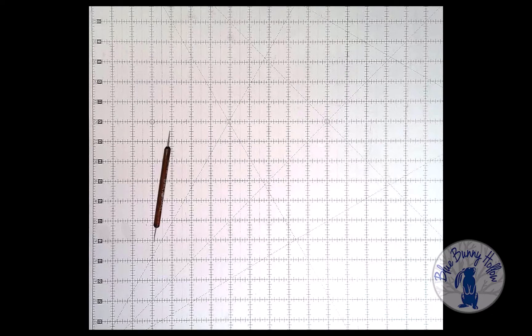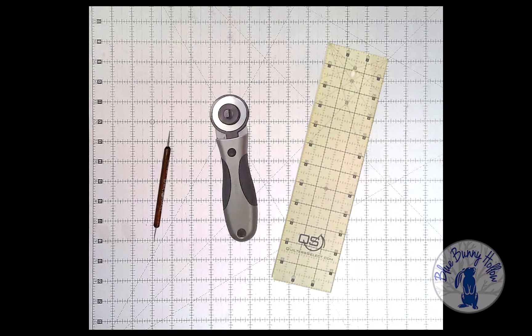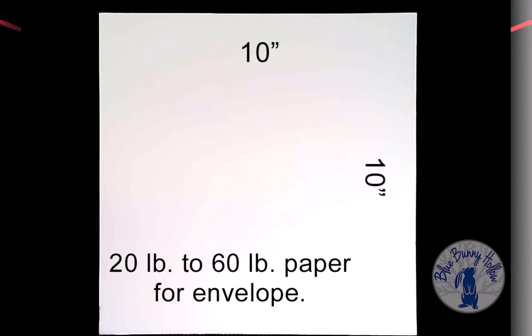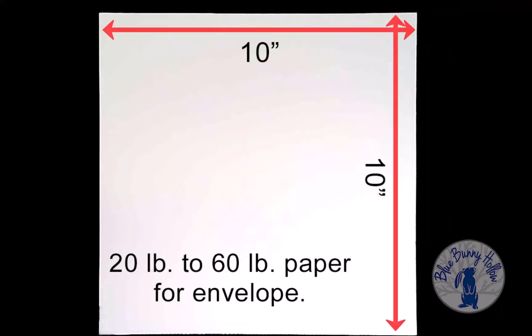We will start with using what you probably have on hand: burnisher, rotary cutter, mat and ruler. For the envelope, 20 to 60 pound paper works well. Using either an 11 by 17 or a 12 by 12 paper, cut it down to 10 by 10 inches.